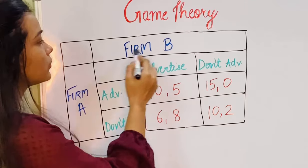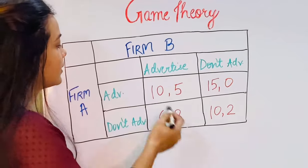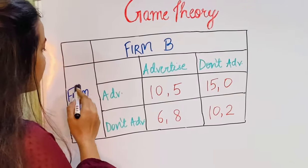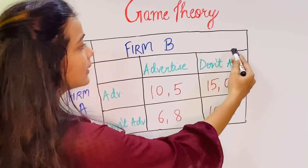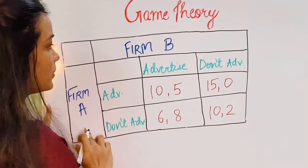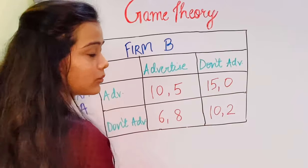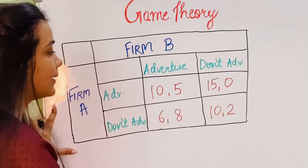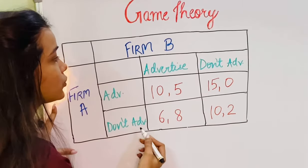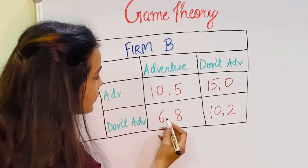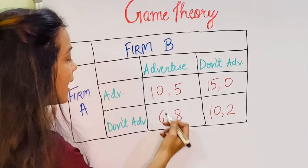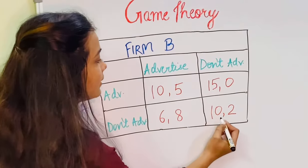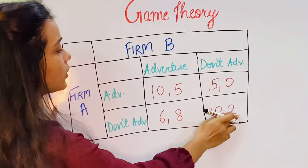When both firms choose to advertise, they get payoffs of 10 and 5 respectively. If Firm A advertises and Firm B does not advertise, the payoffs are 15 and 0. If Firm A does not advertise and Firm B advertises, the payoff to Firm A is 6 and the payoff to Firm B is 8. And if both choose not to advertise, the reward is 10 for Firm A and 2 for Firm B.